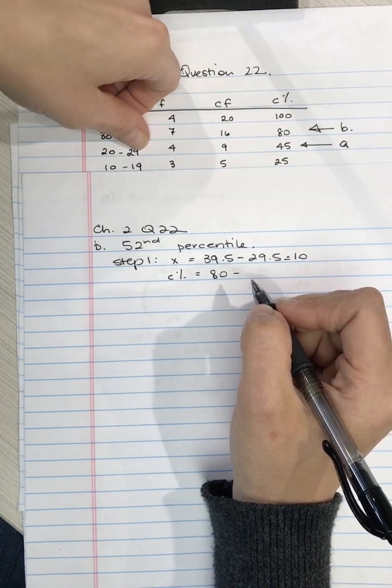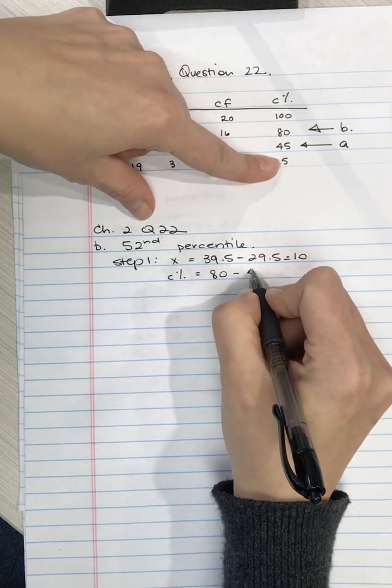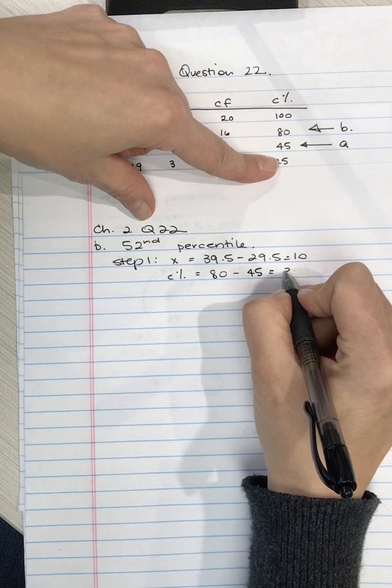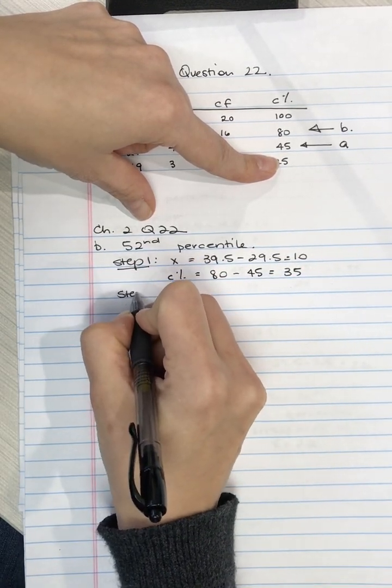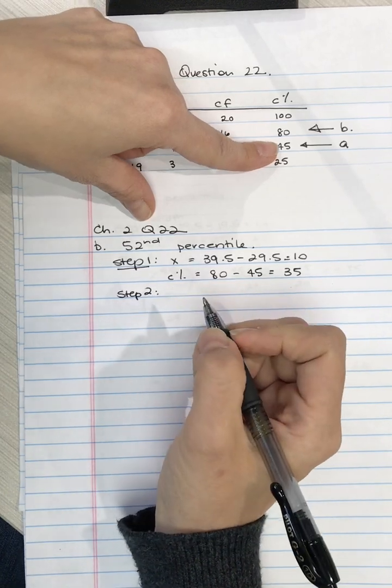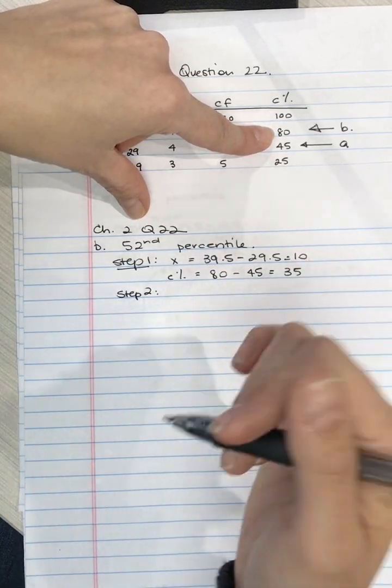So we take the top, which is 80, that is the percentile that is associated with the top of this interval 39.5, and we subtract the percentile that's associated with the bottom, which is 29.5. So we're going to take 80 subtract 45 and that gives us 35.